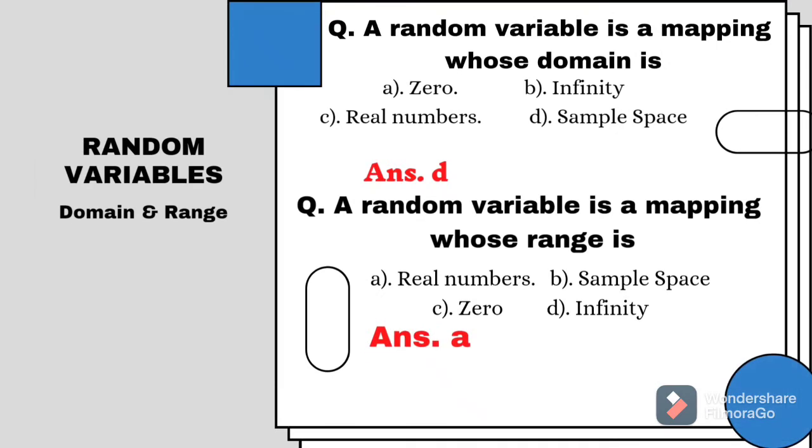So the questions in the GAT subject test are: the first one is a random variable is mapping whose domain is 0, infinity, real numbers and sample space. Always remember that the domain is a sample space. And the next question is about range. So range is always real numbers.